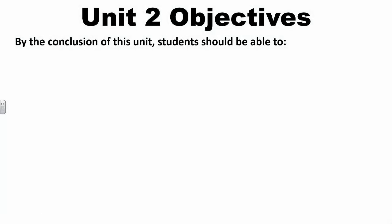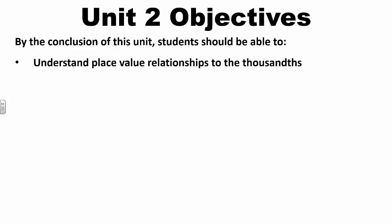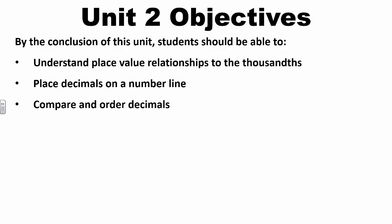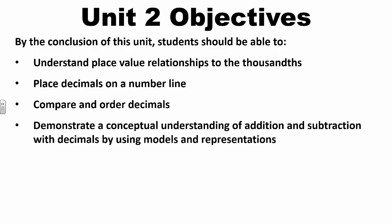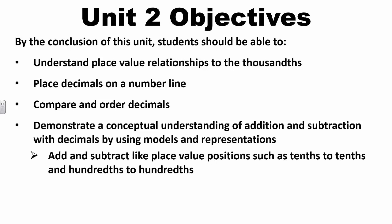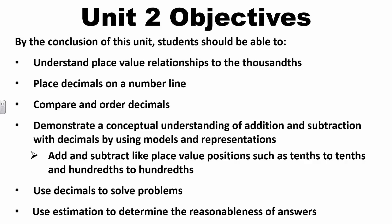By the conclusion of Unit 2, students should be able to understand place value concepts and the relationships between digits to the thousandths place, accurately place decimals on a number line, compare and order decimals using terms and symbols for greater than, less than, or equal to, and demonstrate a conceptual understanding of addition and subtraction with decimals to the hundredths. Students should understand that just as we add and subtract like place value positions with whole numbers, we need to add and subtract like place value positions with decimals, use knowledge of decimals to solve problems, and use estimation to determine the reasonableness of answers.